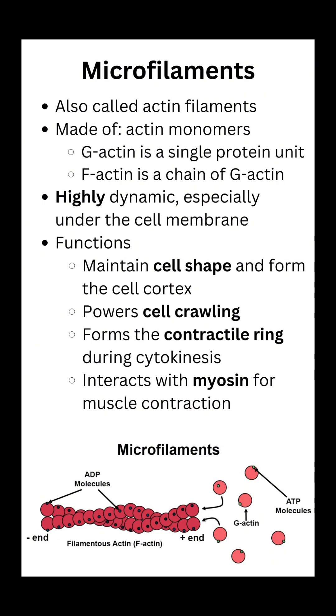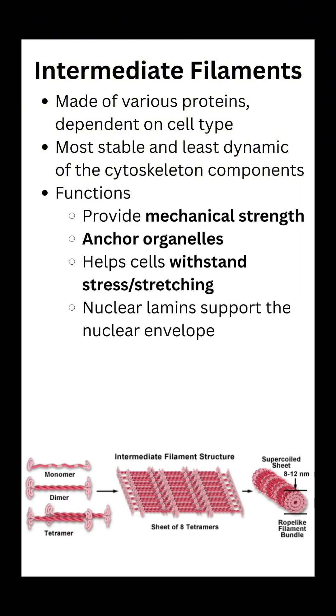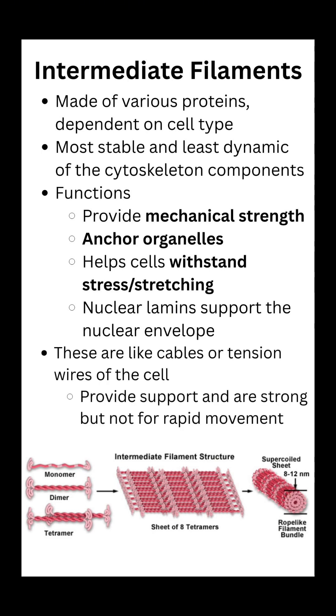When it comes to our intermediate filaments, they are slightly thicker than microfilaments, but they are made up of different proteins, and the proteins they're made of depends on the cell type. These are our most stable and permanent part of the cytoskeleton because they provide mechanical strength, anchor our organelles, and help the cell withstand tension and stress. We can think of intermediate filaments like cables or steel wires running through the cell — they are strong, stable, and built to last.